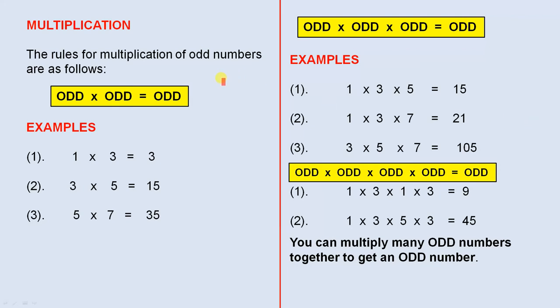Multiplication. The rules for multiplication of odd numbers are as follows. If you have an odd multiplied by an odd, that gives you an odd. If you have odd times odd times odd, that gives you an odd — there are three examples. And if you multiply four odds together, you get an odd. The rule says: no matter how many odd numbers you multiply together, you will always get an odd number. So those are just three examples to illustrate that fact.